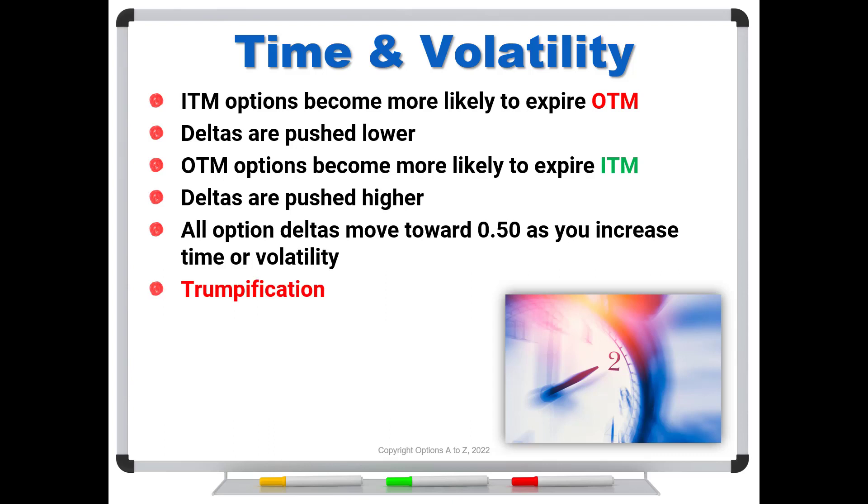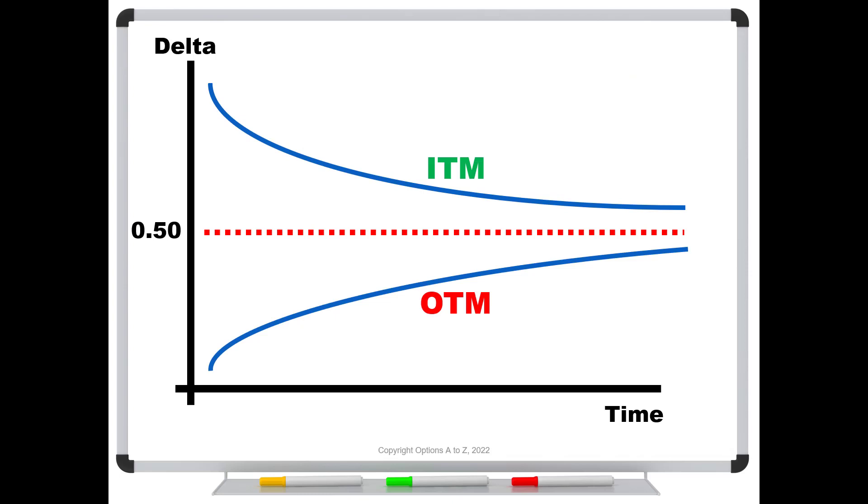This is the trumpification effect that we've talked about in a previous video. And this is what it looks like. So here we've got time going this way. Here's our delta on the vertical. Here's delta of a half.